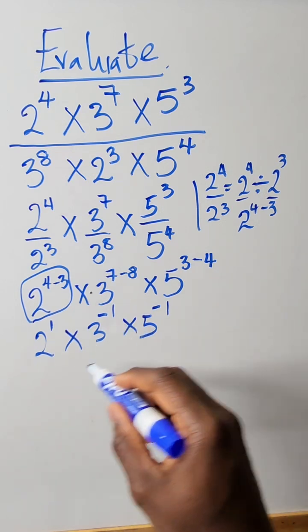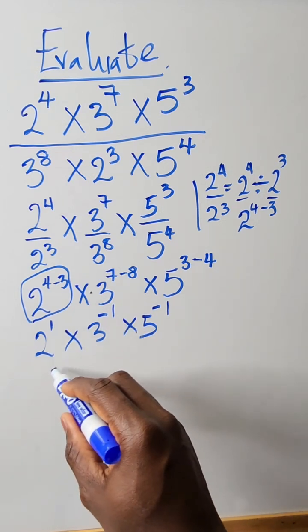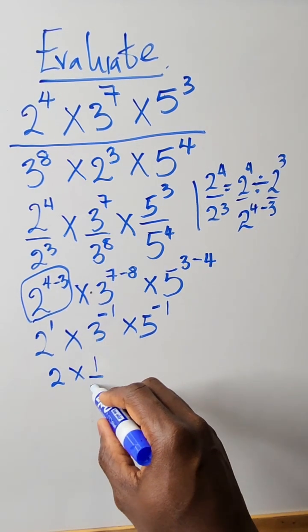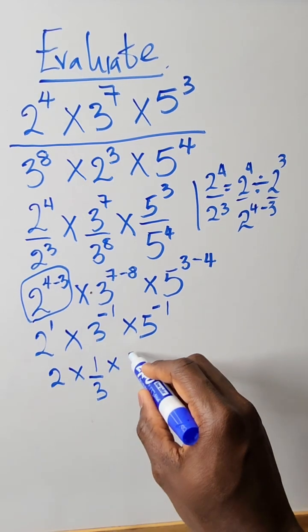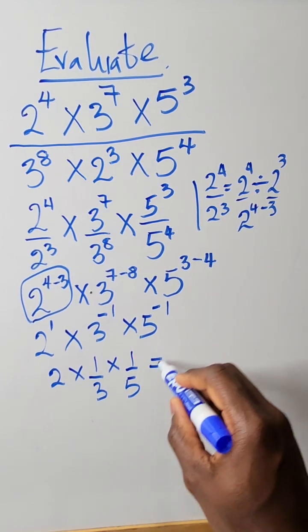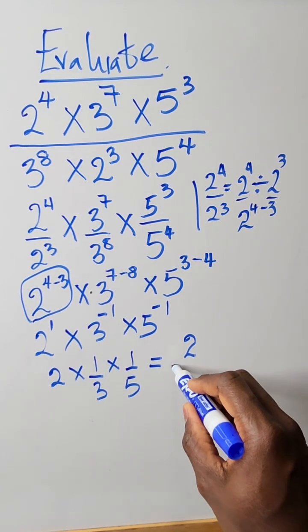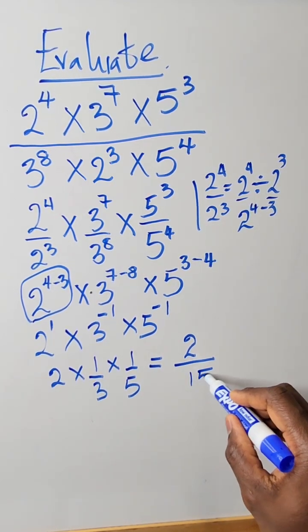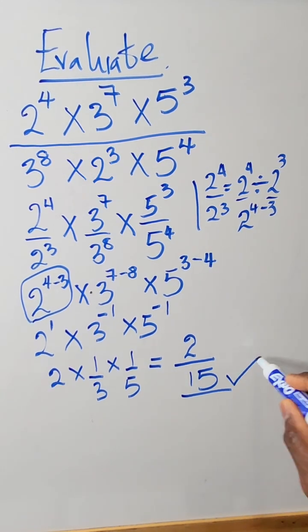So this can be rewritten 2 times 1 over 3 times 1 over 5. And this becomes 2 divided by 15. And this is our answer.